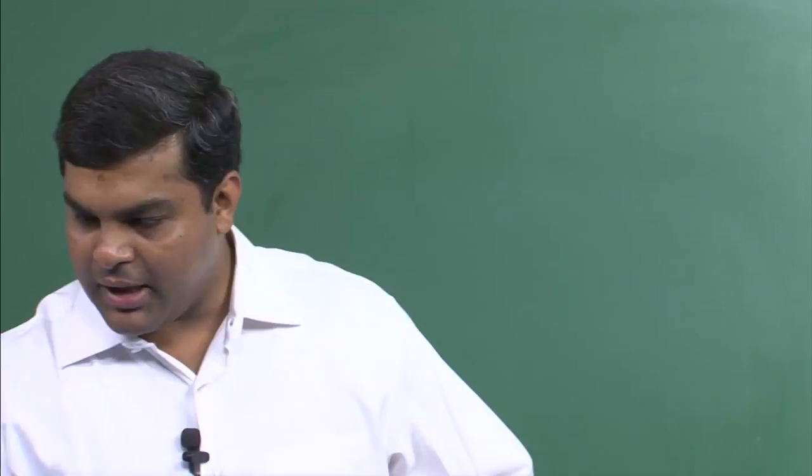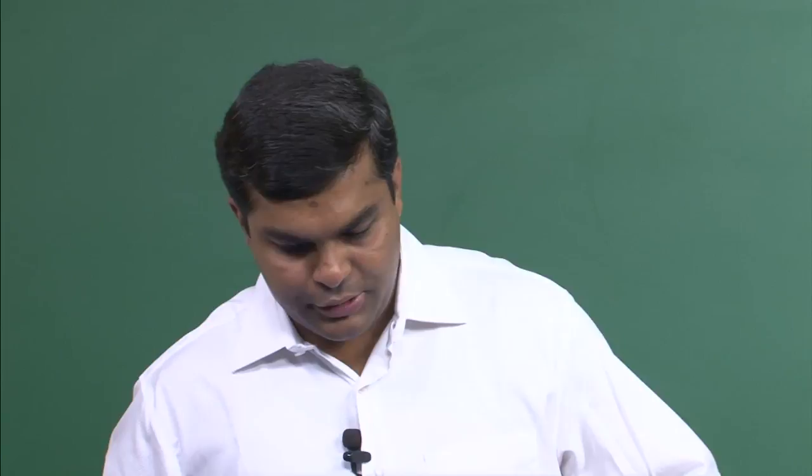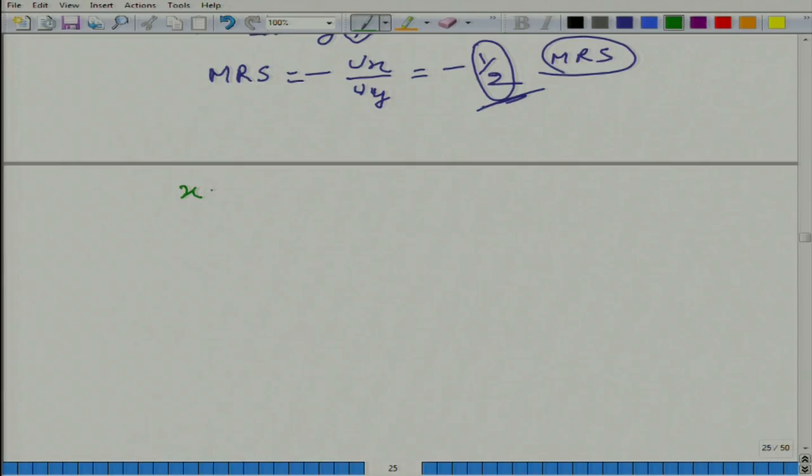Now let us begin with the problem, where we have utility function as x plus 2y. This is the utility function. What I am saying is that this problem is from a two good world. On the x axis, the quantity of first good is given in x and quantity of second good in y.